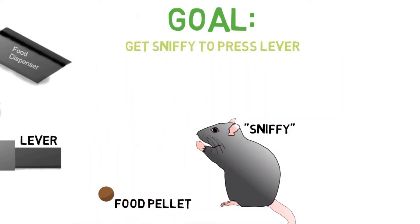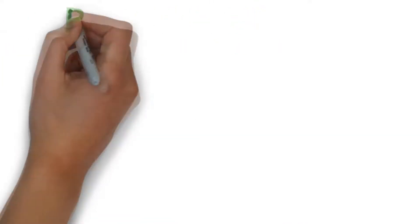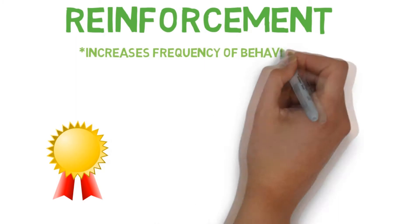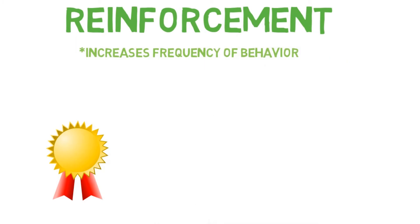Well, first we need to cover reinforcement and punishment. A reinforcement is anything that increases the frequency of a behavior, and a punishment is anything that decreases the frequency of behavior.